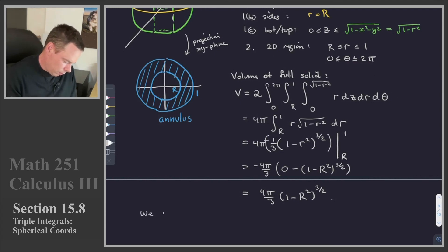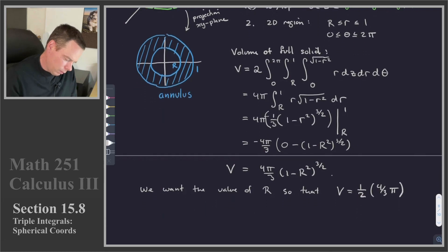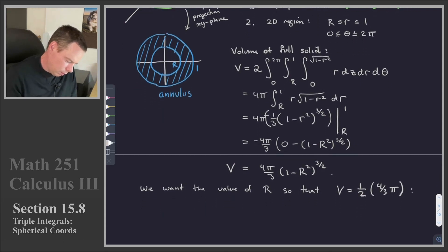We want the value of r so that this volume, which I'll call v, so that the volume is equal to 1 half of the volume of a sphere of radius 1. So that's 1 half of 4 thirds pi. Alright, so let's check. What is the value of r that does this? Well, that means we want 4 pi by 3, 1 minus r squared to the 3 halves has to be 1 half of 4 thirds pi.